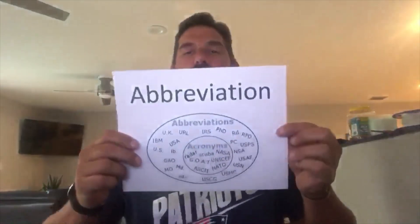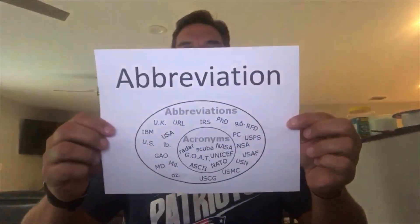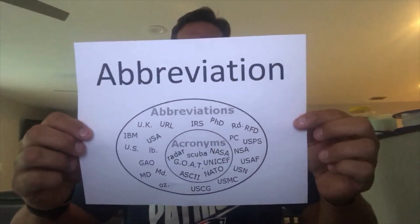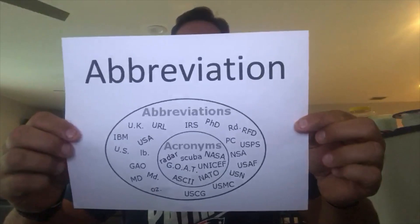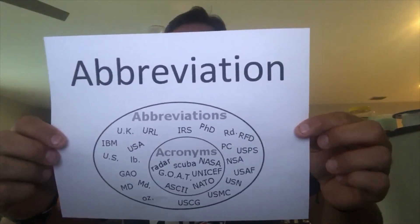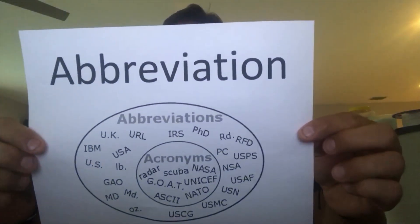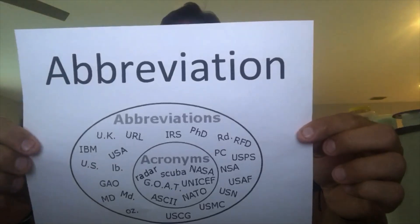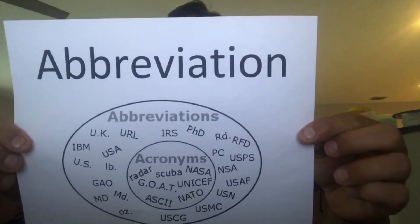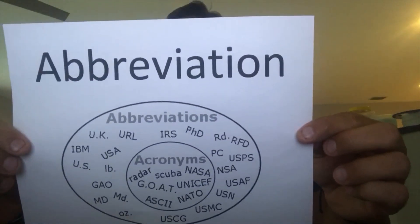Good morning, everyone. Happy Tuesday. This is Mr. Verdeer with Verdeer's Vocabulary Word of the Week. Our vocabulary word for this week is the word abbreviation. Abbreviation is a shortened form of a written word or phrase used in place of the whole word or phrase. It's also the act or result of abbreviating something.